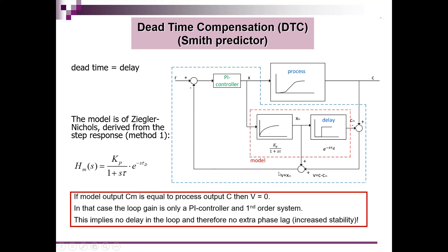We control our process with a PI controller, because there is a delay in the system and it's always good to have an integrator in the controller. If the model output CM equals the system output C, the error is very small, so we have a good process estimation and can use the first order model in the feedback loop. This means the delay is not in the feedback path, which allows extra gain in the PI controller — giving a larger bandwidth and better system speed. Because that extra phase lag from the delay is absent, we also get increased stability. That is the key advantage of using the Smith predictor for dead time compensation.